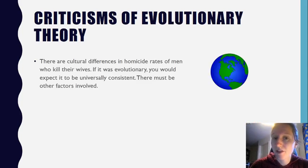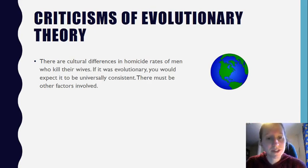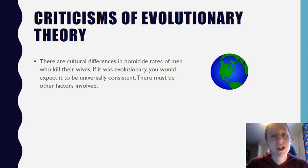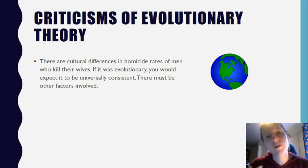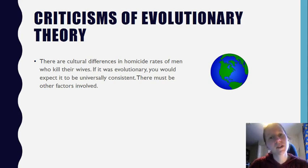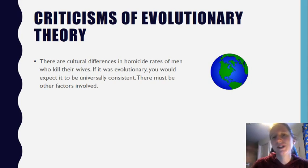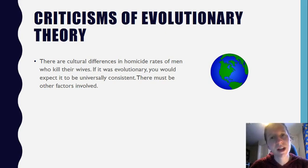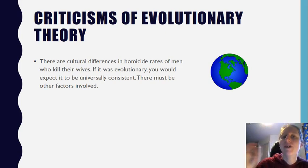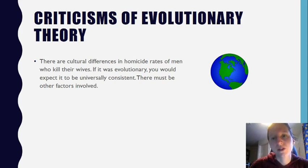Moving to criticisms of evolutionary theory: there are cultural differences in homicide rates of men who kill their wives. If aggression was an evolutionary thing, we would expect it to be consistent across all humans, not just found in one culture or another. If it's a feature of behaviour that enables us to survive and pass on our genes, we'd expect rates of aggression to be consistent across the globe. If they differ by area, that suggests other factors may be involved, not just evolutionary ones.